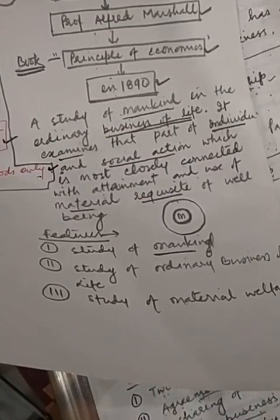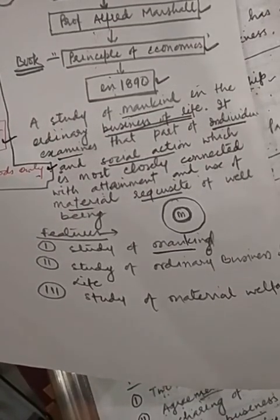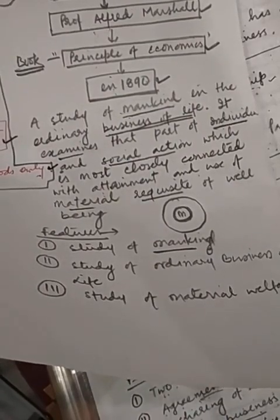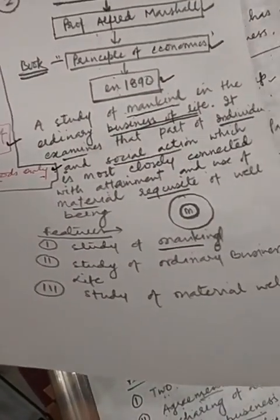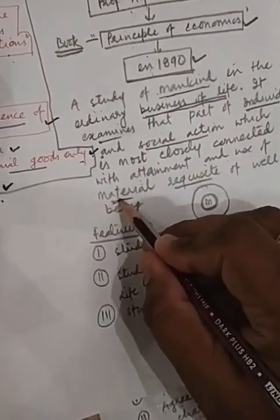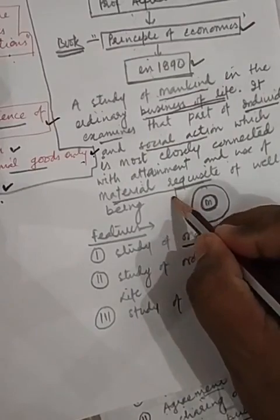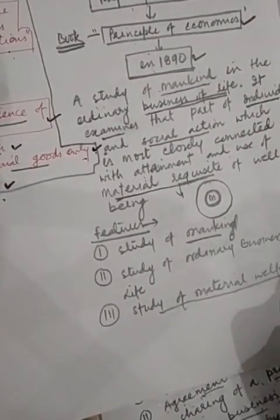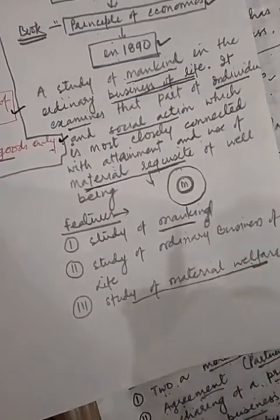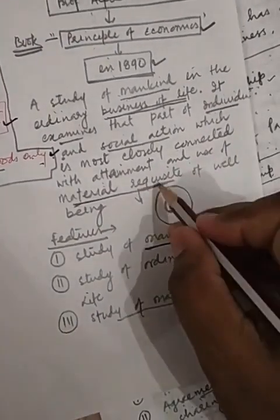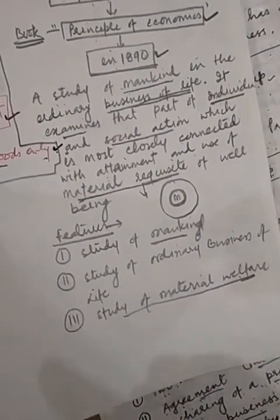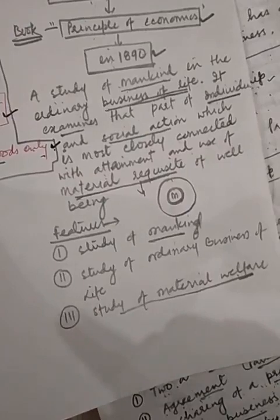In short, material welfare, instead of earning money, is the motive behind all economic activities — wealth is regarded only as a means to achieve this objective. Economics considers all those material requisites for which we are paying money. Only that type of thing economics will consider according to the Marshall definition.